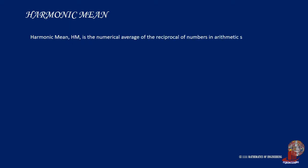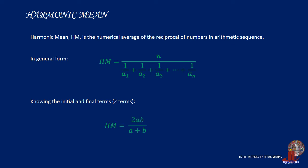Just like the other sequences, harmonic progression also has a harmonic mean, which is defined as the numerical average of the harmonic sequence. In general form, harmonic mean is taken as the number of terms over the reciprocal of all the terms in the arithmetic sequence. Nevertheless, if there are only two terms a and b involved, harmonic mean will be computed as 2ab over a plus b.